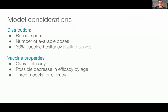Briefly hitting on some other aspects our model included: we wanted the ability to change rollout speed as well as the total amount of vaccines available. We included a baseline rate of 30% vaccine hesitancy, though this is quite up in the air and can change country to country. That's another place where we could feed in more data to see how it affects results.